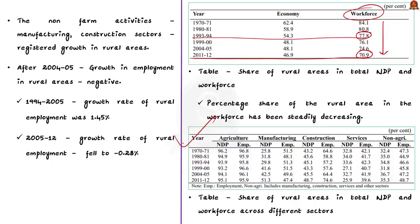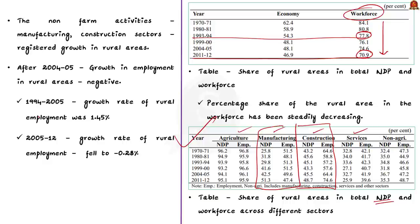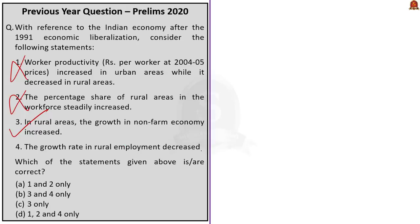Refer to the table showing the share of rural areas in total net domestic product and the workforce across different sectors. Growth in a sector can be inferred through the net domestic product — that is, GDP minus depreciation. Non-farm activities, especially manufacturing and construction sectors, have registered growth in rural areas. Thus, Statement 3 is correct. After 2004-05, rural areas witnessed negative growth in employment despite high output growth. The rural employment growth rate was 1.45% during 1994-2005, falling to negative 0.28% between 2005-12. Hence Statement 4 is also correct.